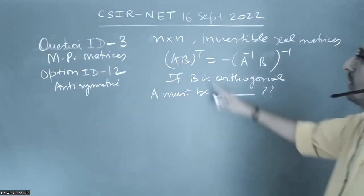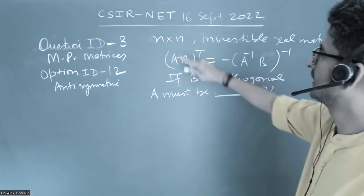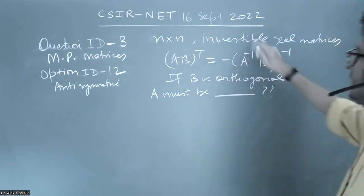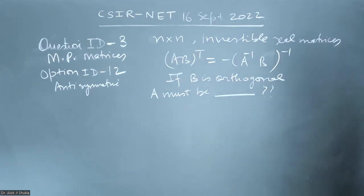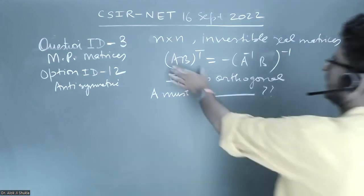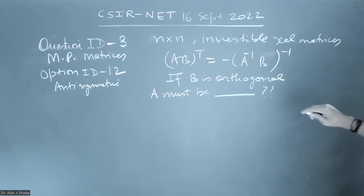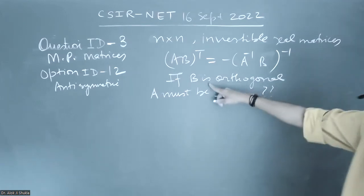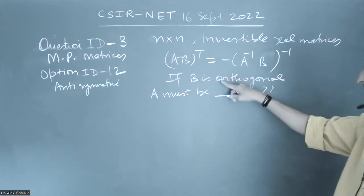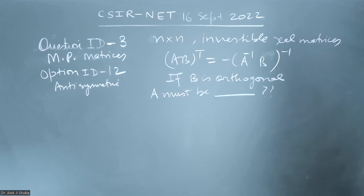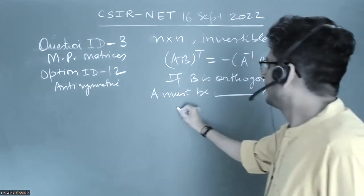In this question, an n×n matrix is given. A and B are n×n matrices and they are invertible. They are real matrices and the condition given is that AB^T equals some expression. They are also stating that B is orthogonal. So we need to determine what A must be.